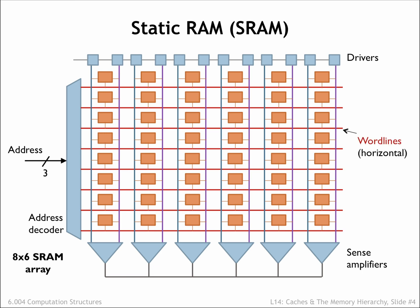The address decoder logic sets one of the 8 word lines high to enable a particular row for the upcoming access. The remaining word lines are set low, disabling the cells they control. The active word line enables each of the SRAM bit cells on the selected row, connecting each cell to a pair of bit lines in the array.